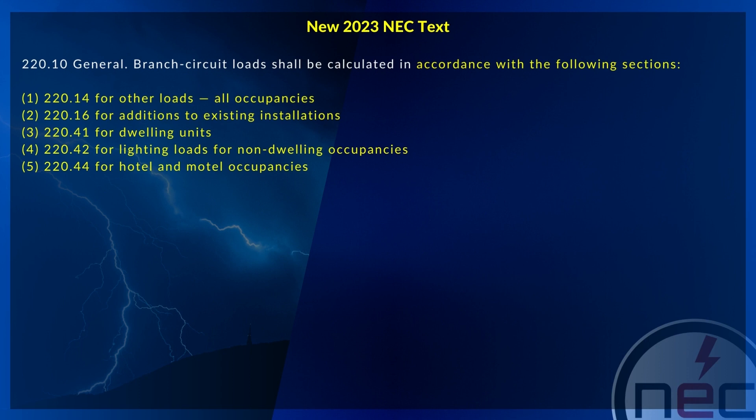A revision has been made to 220.10 in the 2023 National Electrical Code, that states branch circuit loads shall be calculated in accordance with the following sections. Item 1 covers 220.14 for other loads, all occupancies. Item 2 covers 220.16 for additions to existing installations.